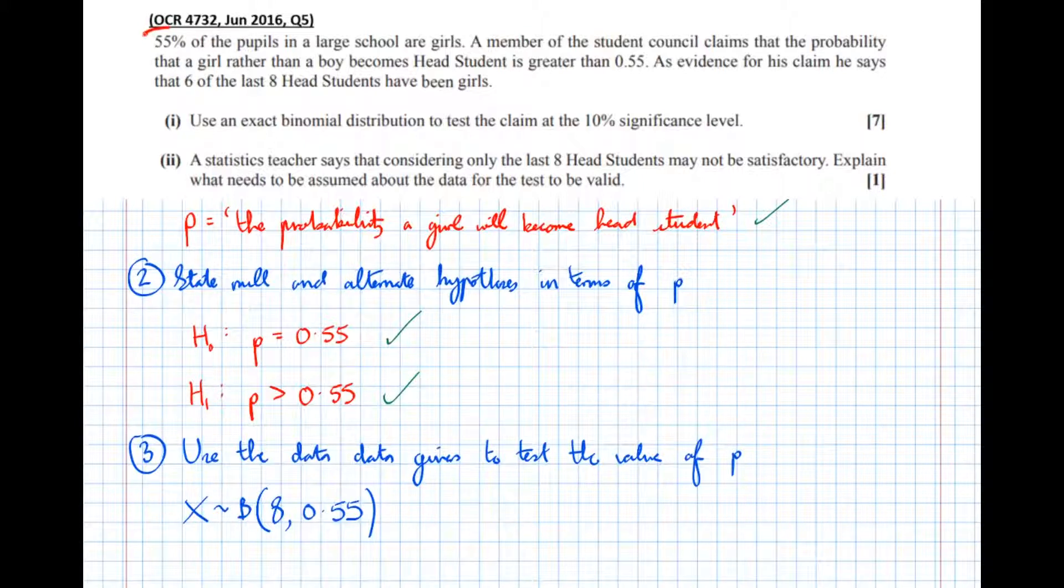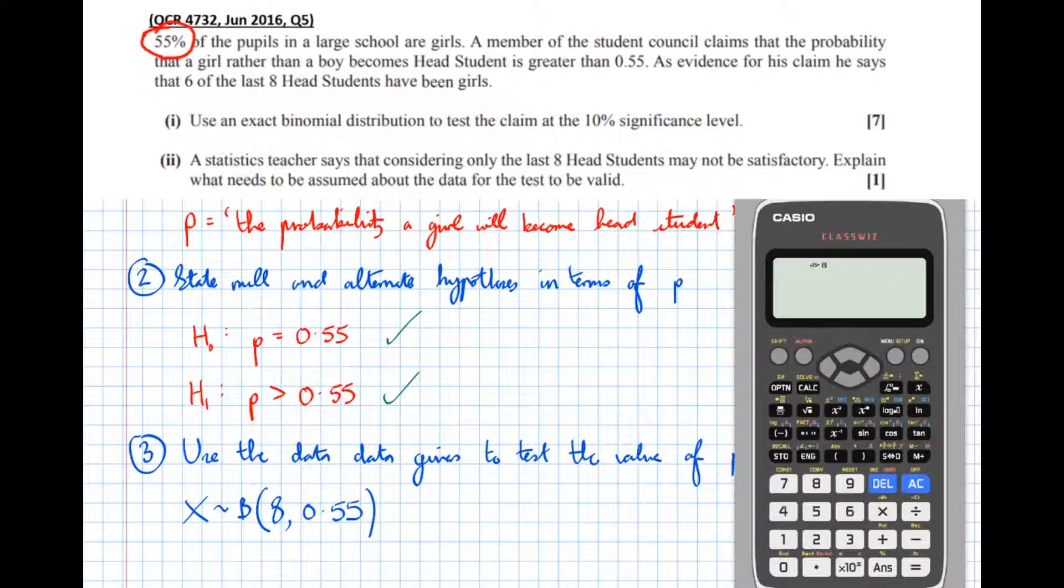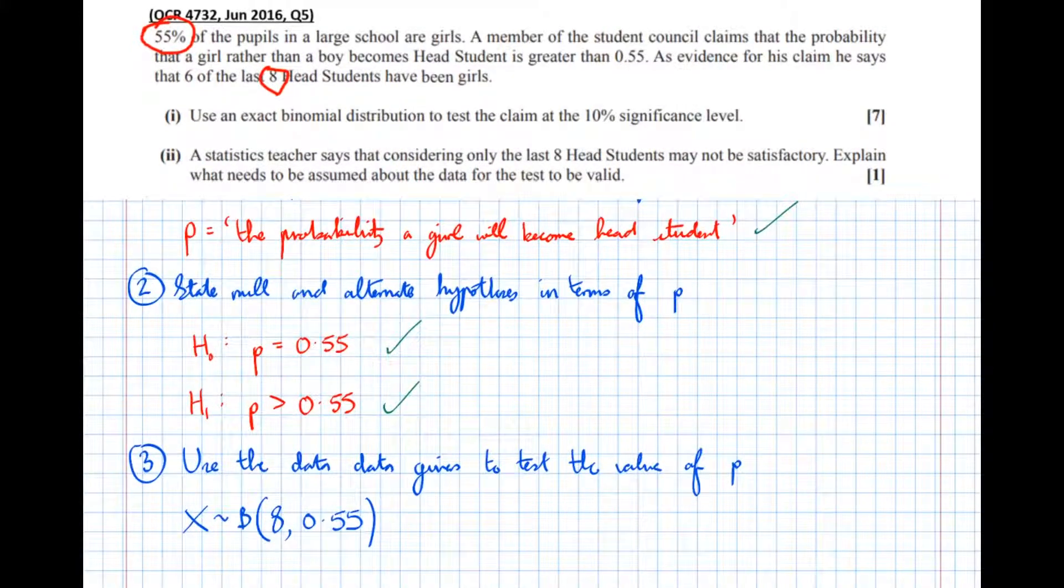We're expecting 55% of the previous head students to have been girls. So we've tested eight students, eight head students we've tested. So eight times 55%, we'd expect 4.4 of them to have been girls. However, of the last eight head students, six were girls. That's bigger than 4.4. But is it big enough to say, with enough certainty, i.e. 90% certainty or 10% uncertainty? That's the significance level, 10%. So we want to be 90% certain or 10% uncertain. Is it enough evidence that six of the last eight head students were girls? Is that far enough from 4.4?